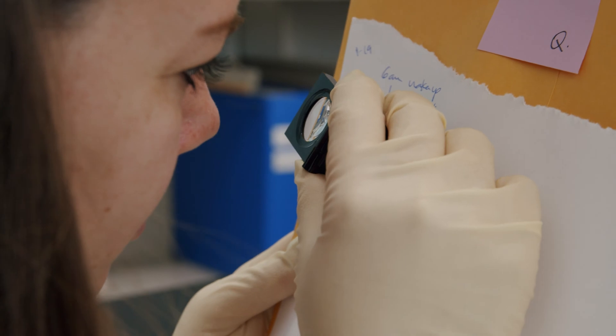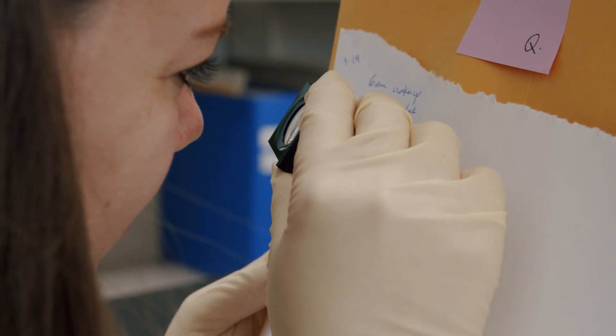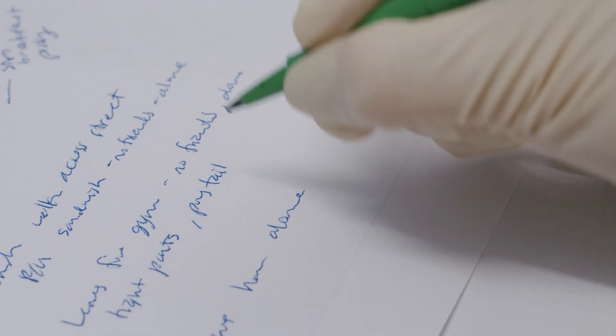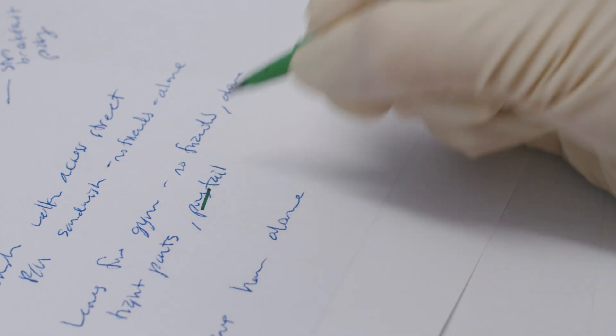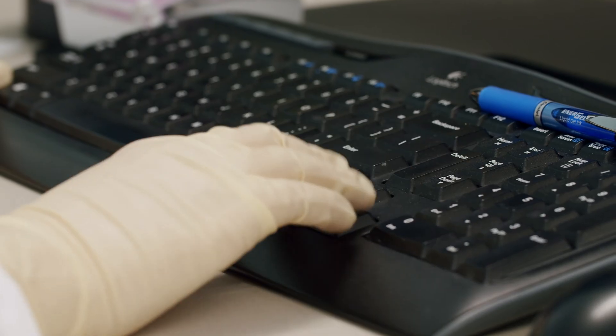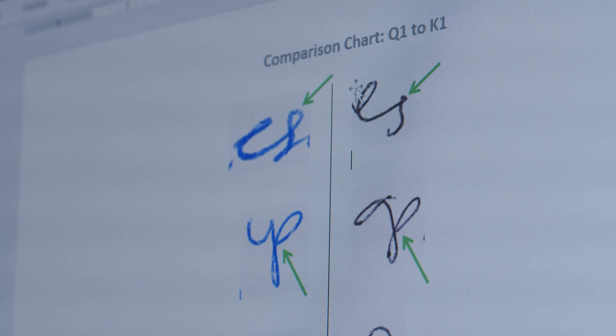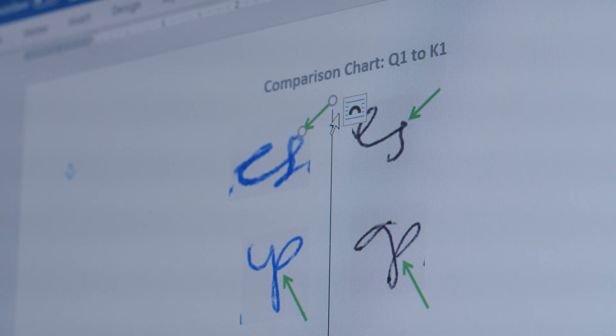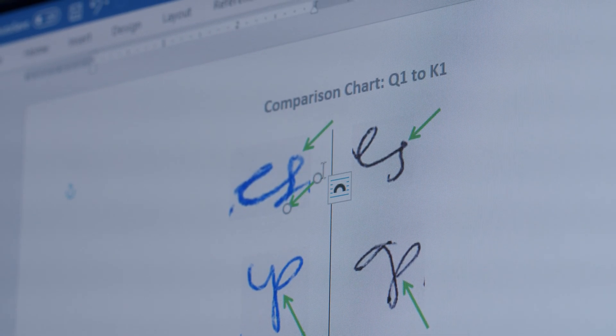When we're doing a signature or handwriting comparison, we're looking for features in the questioned signature or writing, how characters are formed, things like base alignment, height relationships between letters. We will compare the two to determine if the same person wrote those documents.